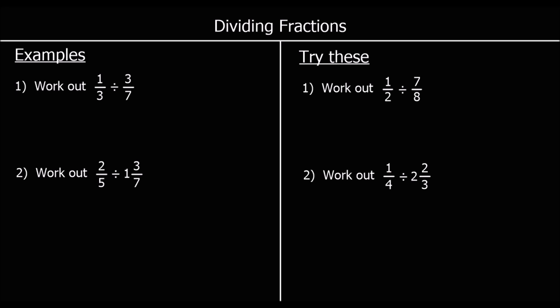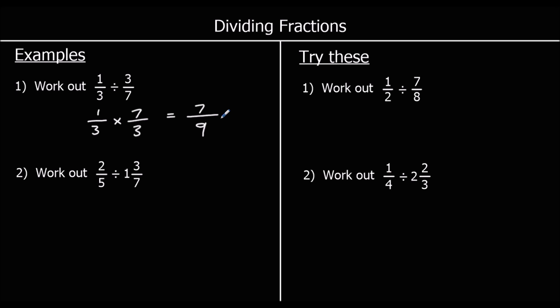Dividing fractions. We need to know that dividing by three-sevenths is the same as multiplying by seven-thirds. So we change the question into a multiplication by flipping over the second fraction. Then we times the top and times the bottom: one times seven is seven, three times three is nine, so we've got seven-ninths.